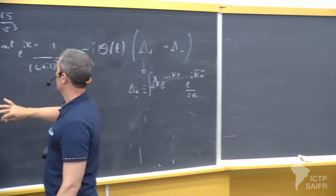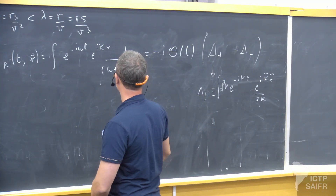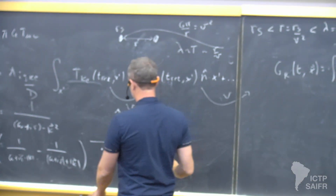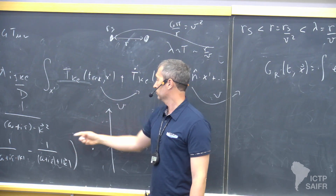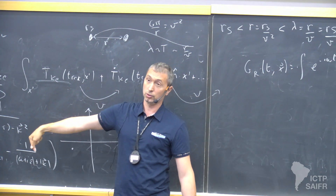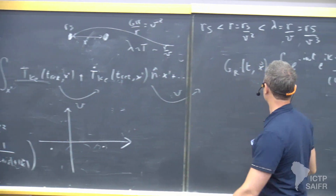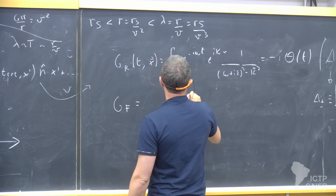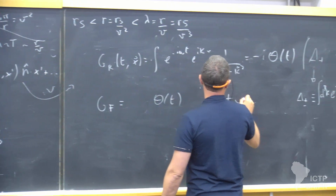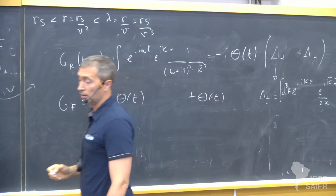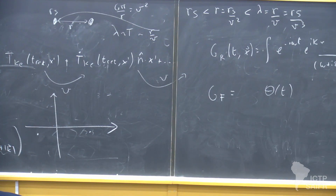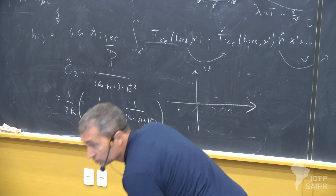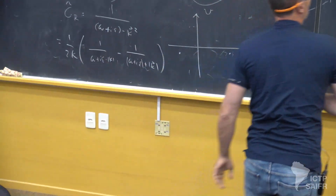This is the retarded Green function. The advanced Green function is trivial — you just put a minus here, so the poles are displaced to the upper side, and when you close, you get an extra minus sign because now you're closing counterclockwise, so there is no overall minus sign. The funny thing is that the Feynman Green function in this representation is a combination of theta of t plus theta of minus t.